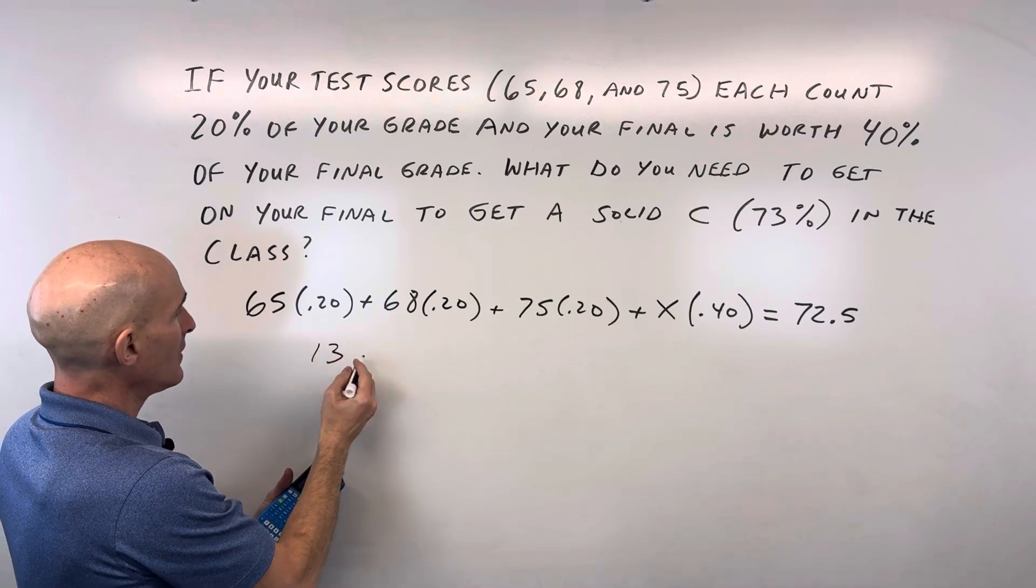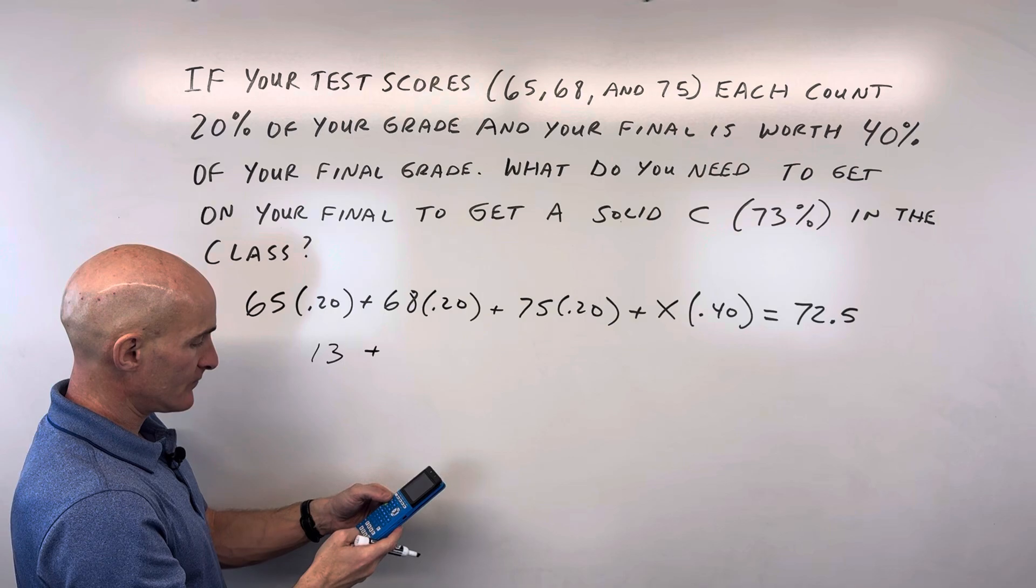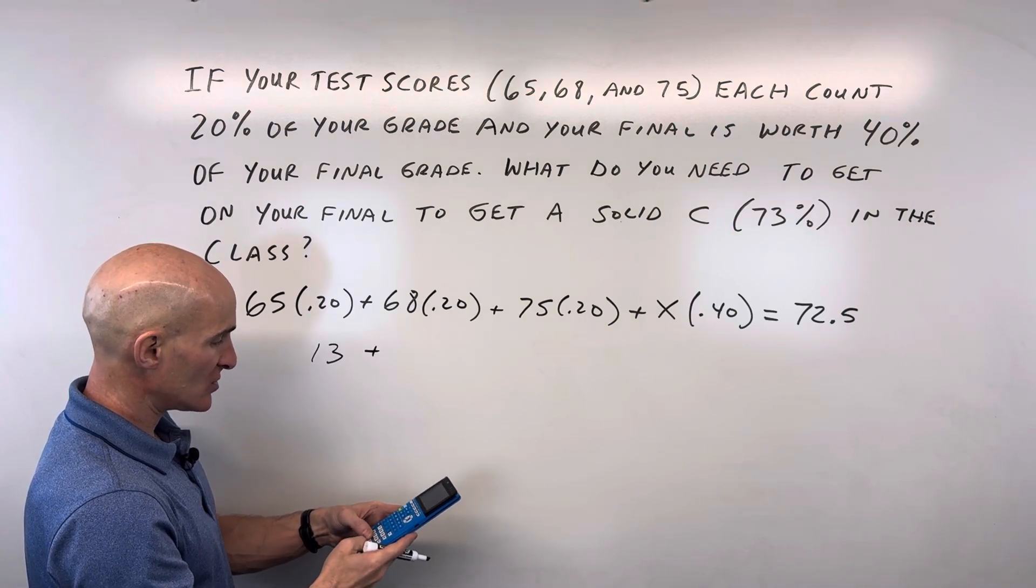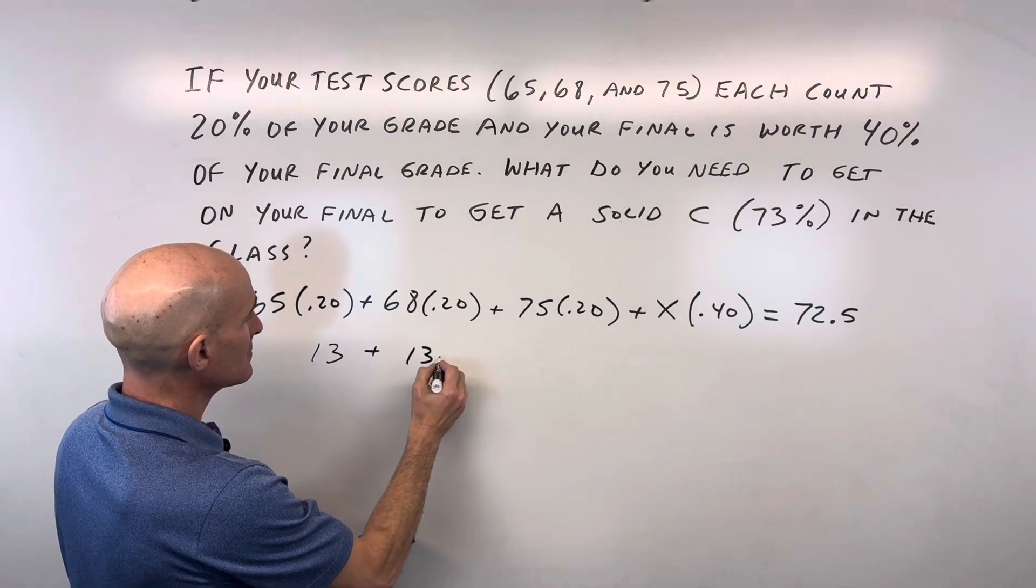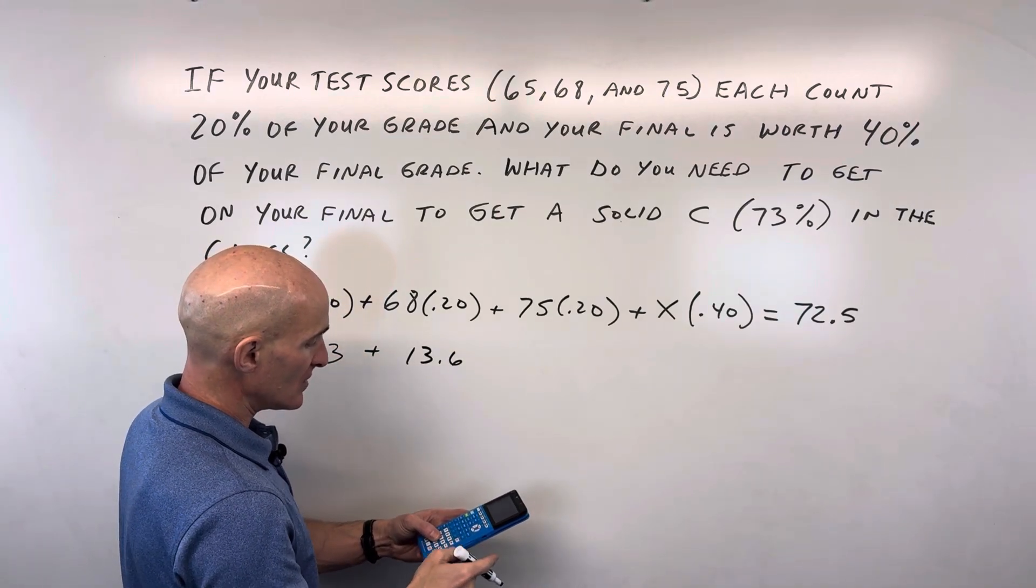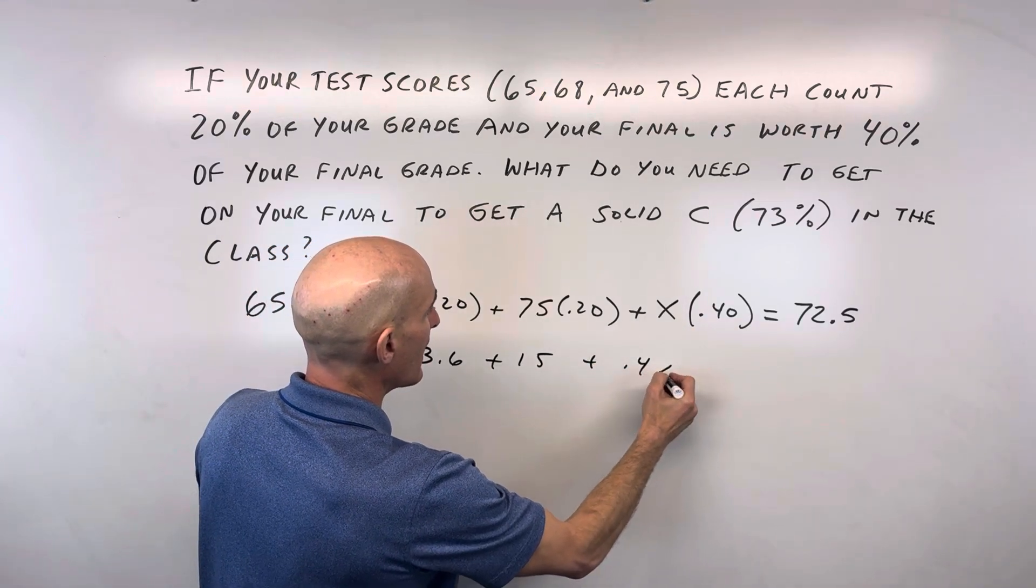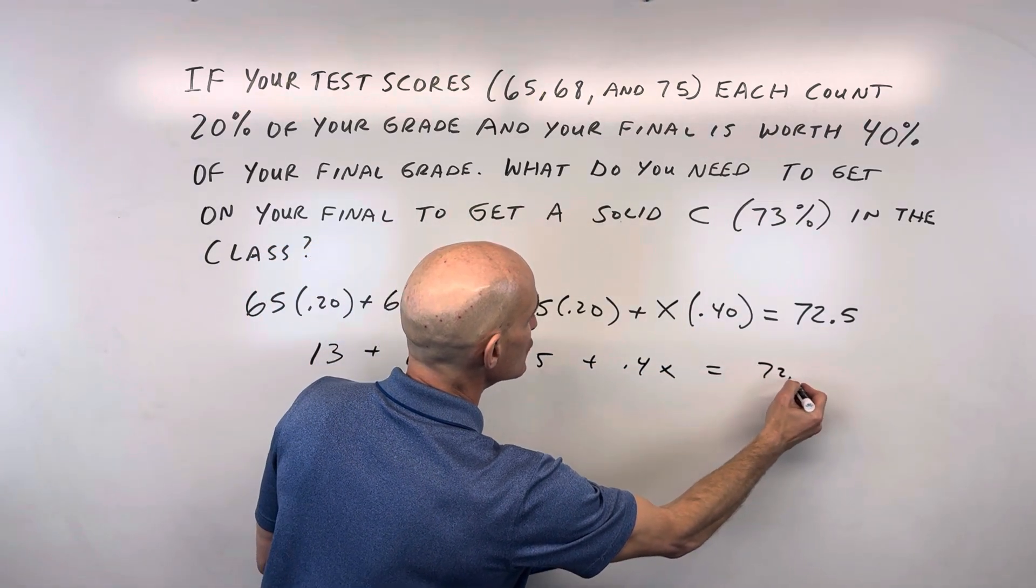And 68 times 0.2 is 13.6, and 75 times 0.2 is 15. Then this is 0.4X, and that equals 72.5.